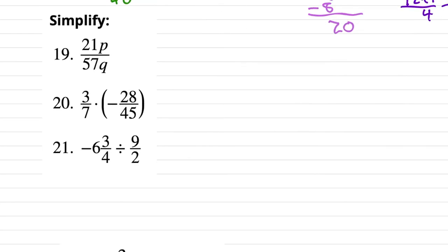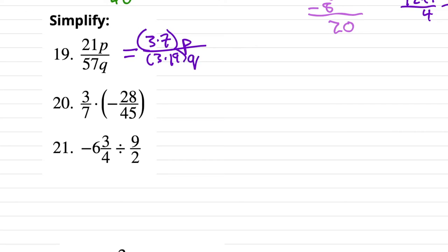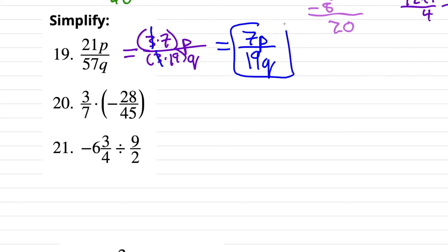Number 19: simplify. The big trick is finding common numbers that go into both numerator and denominator, and common variables. Focus on 21 and 57: 21 is divisible by 3 — that's 3 times 7p. 57 divided by 3 is 3 times 19q. Cancel the threes, leaving 7p over 19q. P and Q can't be divided by one another since they're not like terms, so that is our answer.